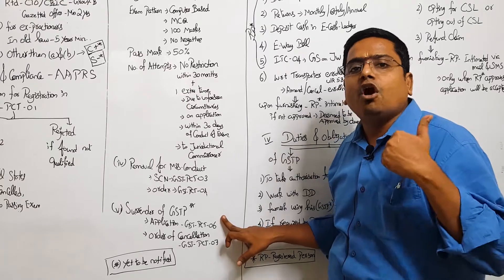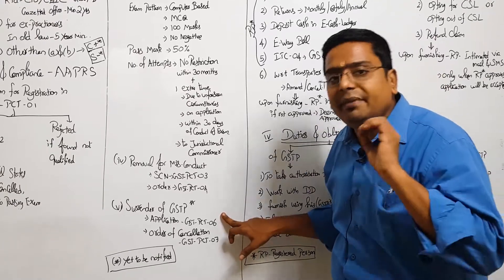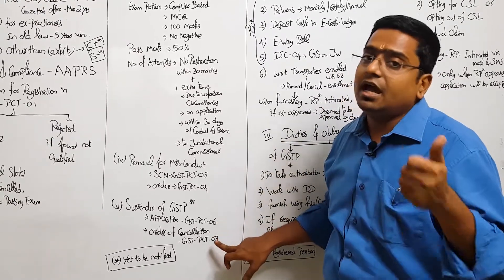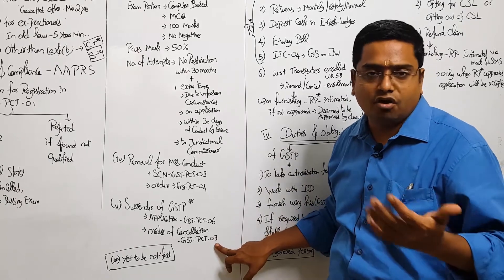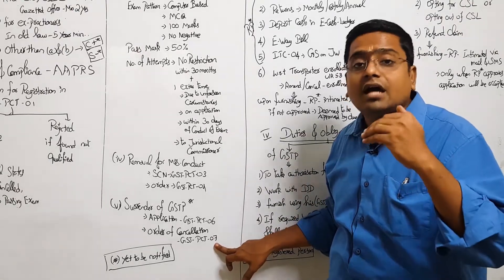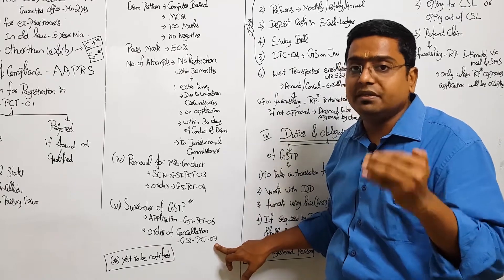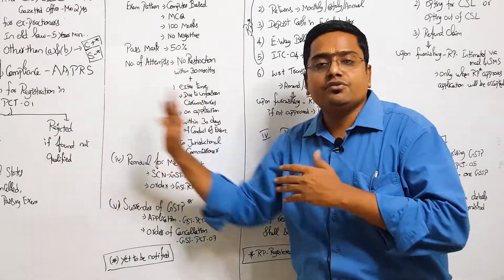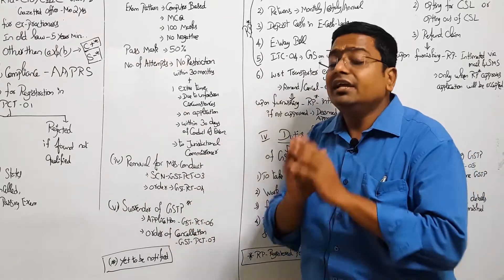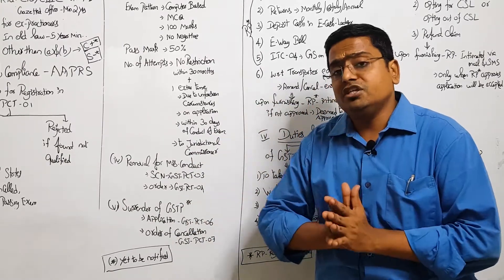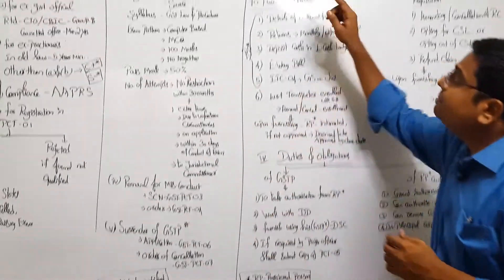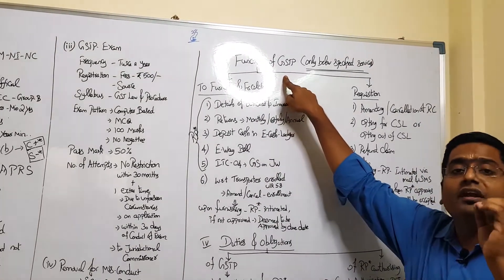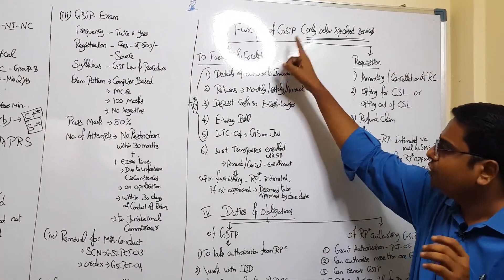Can he surrender voluntarily? Yes, a person can opt out of GSTP by making an application in PCT-06. And proper officer, after investigating the grounds and satisfied, will pass an order allowing the person to surrender the GSTP in PCT-07. This is from origin to exit, entry to exit of life cycle span of GSTP.